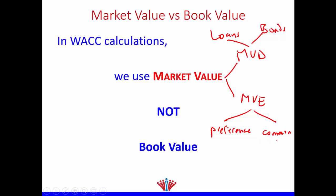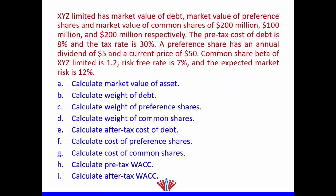So I need to get the market value of preference shares and market value of common shares. It depends on the company under analysis — you could have market value of debt as just one category or two categories (loans and bonds), and equity as one category or two categories (preference shares and common shares). XYZ Limited has a market value of debt, market value of preference shares, and market value of common shares of $200 million, $100 million, and $200 million respectively.